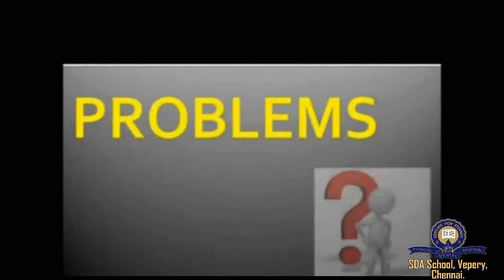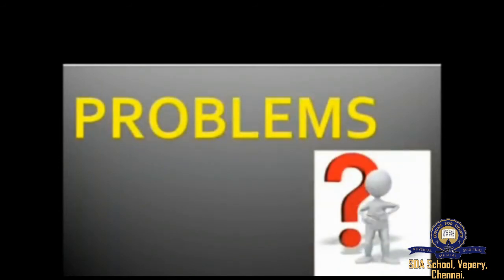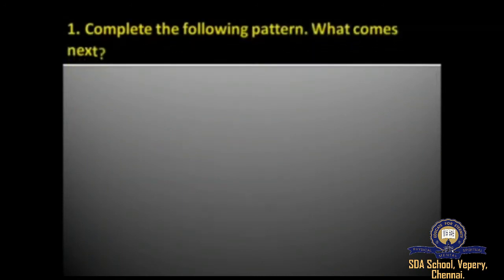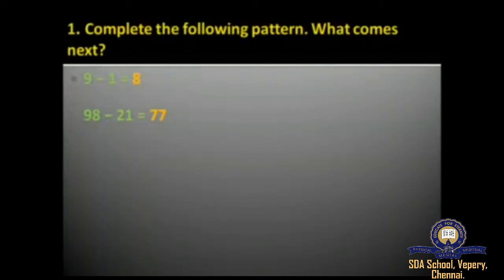Now we'll be solving Exercise 2.2 — the miscellaneous problems. The first question is: complete the following pattern. The first pattern is 9 minus 7, and the answer is 8. The next pattern is 98 minus 21, and when you subtract 21 from 98 the answer you get is 77.